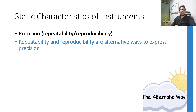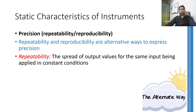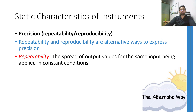Precision can further be expressed in two different ways: repeatability and reproducibility. Both of these terms have totally different definitions. Repeatability means producing the same result for the same input applied multiple times under constant conditions. This means, if you are using an instrument again and again to measure something, make sure the environmental conditions are kept constant — that is, the temperature of the environment, pressure, wind speed, humidity, and any other factor that may influence the output.